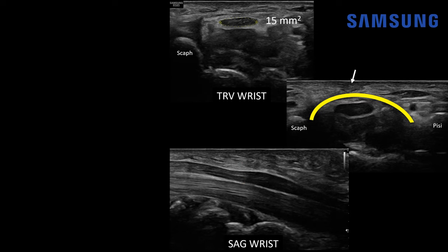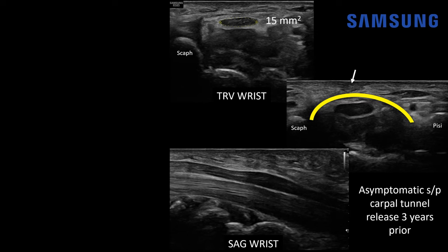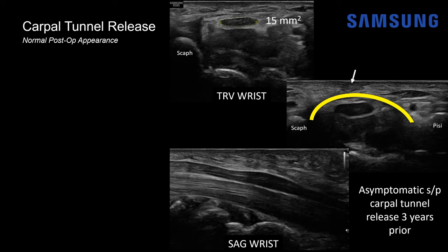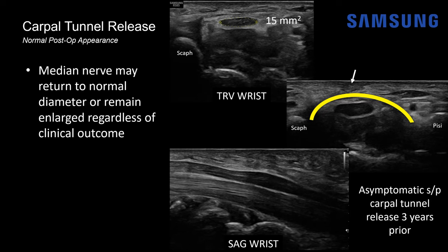However, notice this ill-defined hypoechoic area just deep to the skin surface in the subcutaneous fat. That represents scar tissue — this patient actually had carpal tunnel release three years prior and was now asymptomatic with complete resolution of symptoms. This is a normal post-operative appearance. The median nerve may return to normal diameter after surgery, or it could remain enlarged as in this case, regardless of clinical outcome — so the images must be correlated with the patient's symptoms.